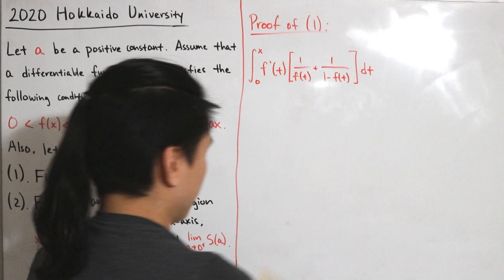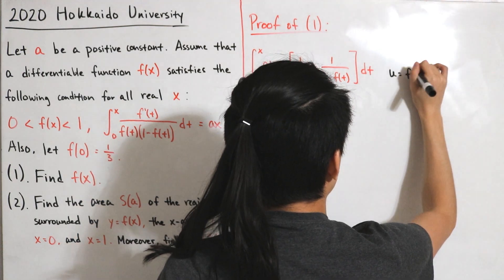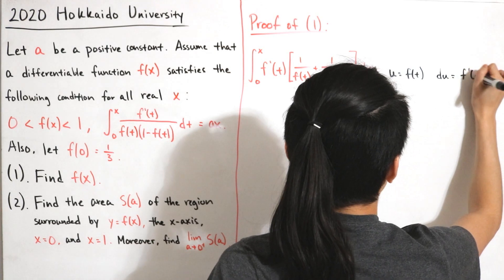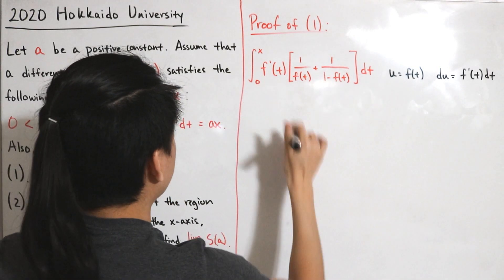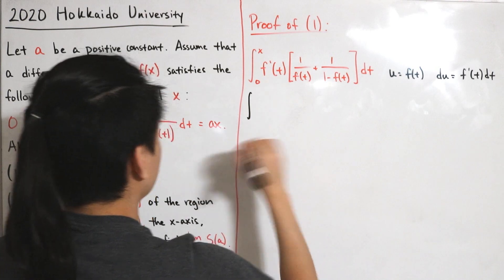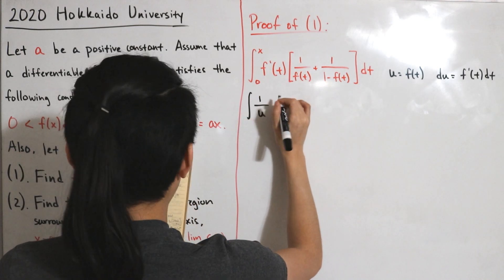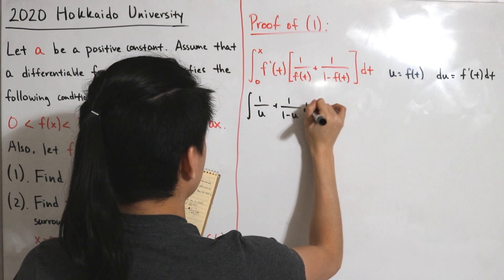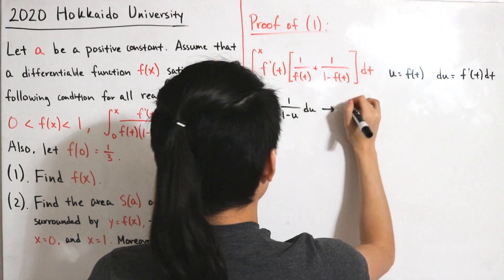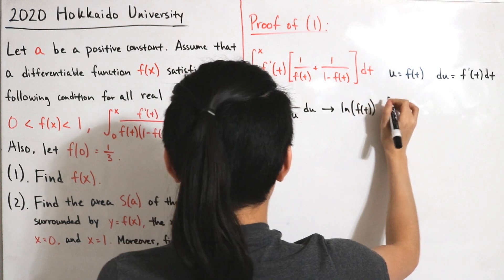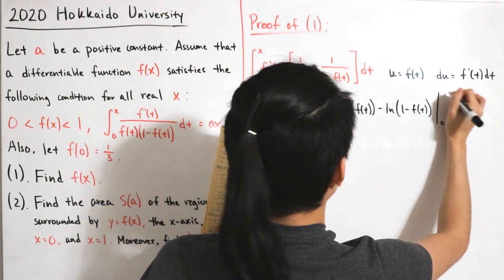Now let's perform a u-substitution. Let u = f(t), so du = f'(t) dt. That cancels the f'(t) dt, giving du. Treating this as an indefinite integral and substituting back, we get 1/u + 1/(1 - u) du. Finding the antiderivative, then substituting u back in, we get ln|f(t)| minus ln|1 - f(t)|, evaluated from 0 to x.